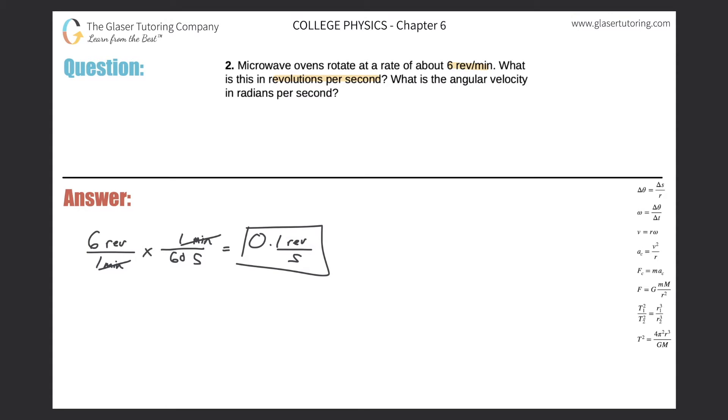Then it says, what is the angular velocity in radians per second? So now the goal is I have to convert my 0.1 revolutions per second into radians per second. So let's set it up: 0.1 revolutions per one second. I notice I want to get rid of the revolutions, so therefore they have to go in the denominator.